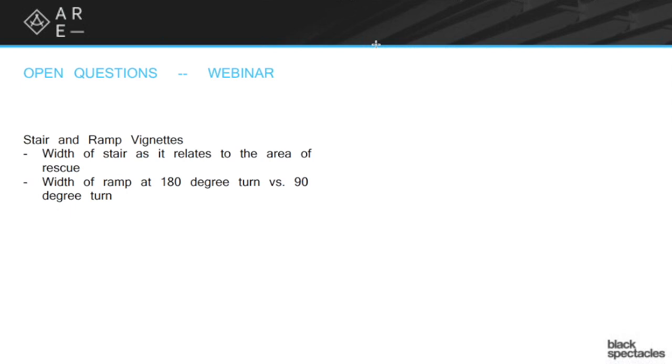The width of the stair as it relates to the area of rescue is truly weird. You're going to have to read very closely on the code for the stair vignette. So you calculate out the total occupancy load, looking for how many total people. You're looking for the occupancy of each floor, and then divide that by however many stairs or exits there are, which is either going to be two or three.